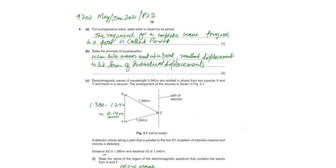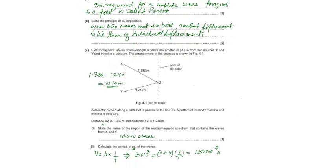Part 3. Electromagnetic wave of wavelength 0.04 meter are emitted in phase from two sources, X and Y, and travel in a vacuum. The arrangement of the source is shown by this. Two waves here, coming from X and Y, and meet at a point, Z.